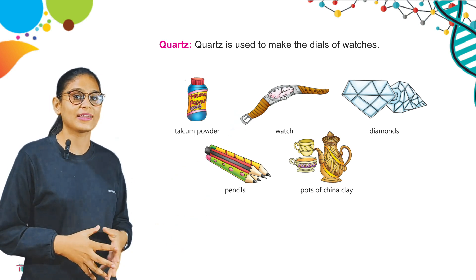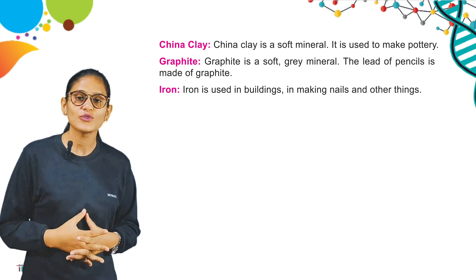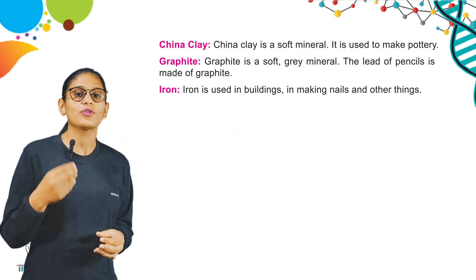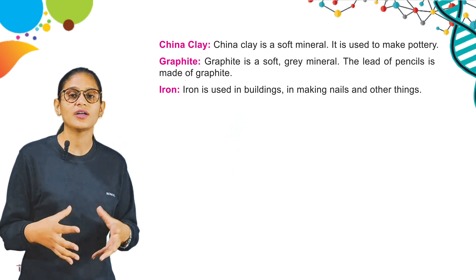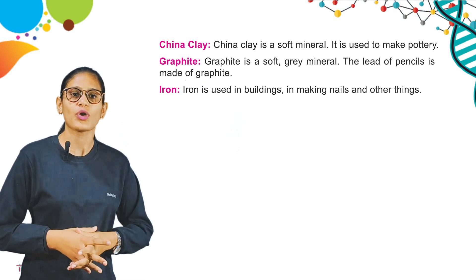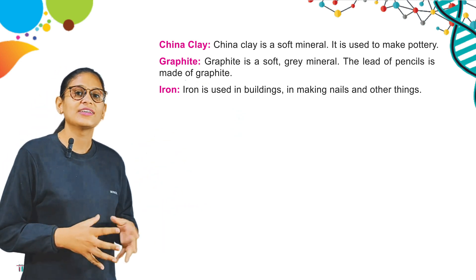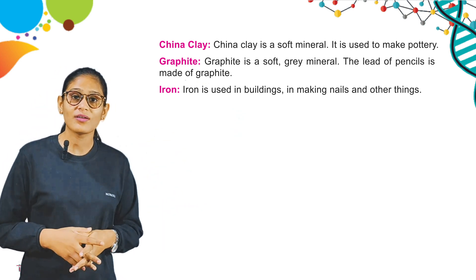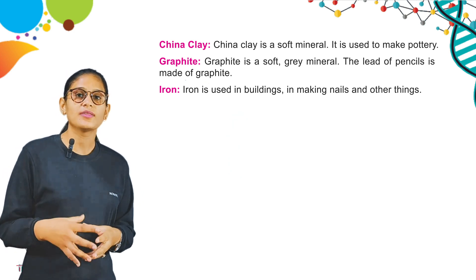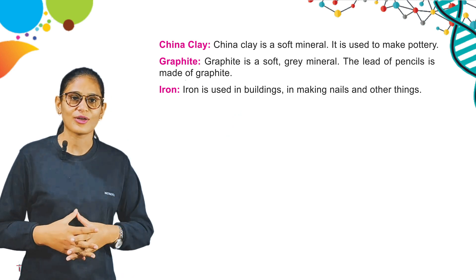China clay is a soft mineral. It is used to make pottery — pots and similar things. Here is graphite. Graphite is a soft gray mineral. The lead of a pencil is made of graphite.